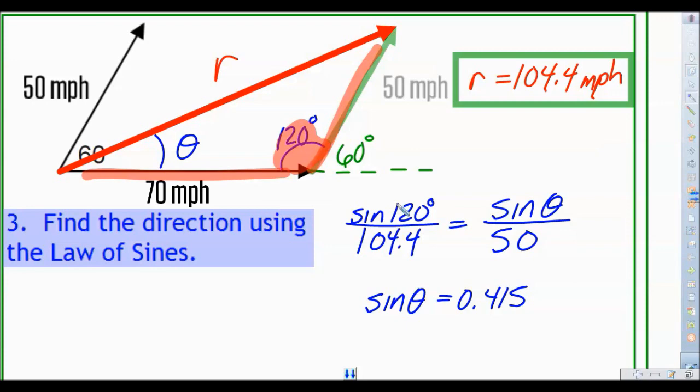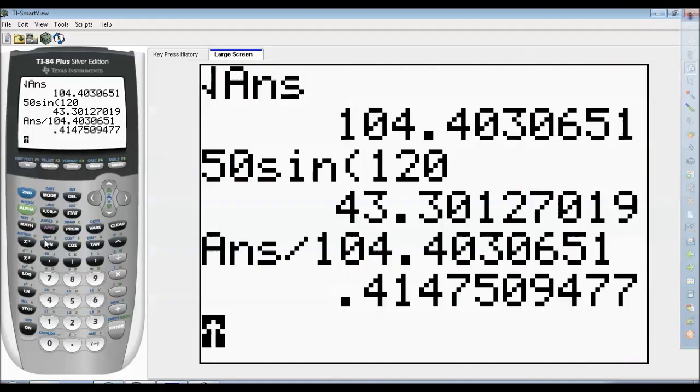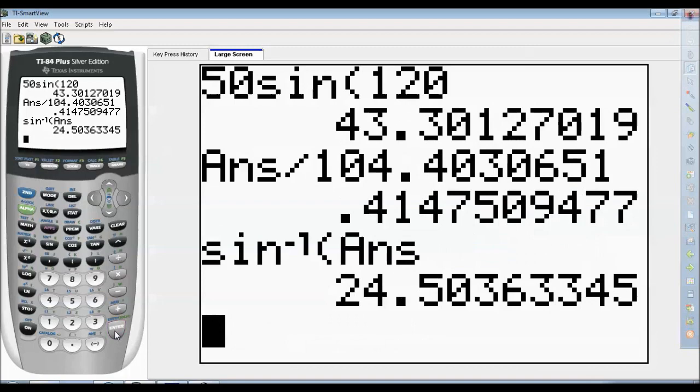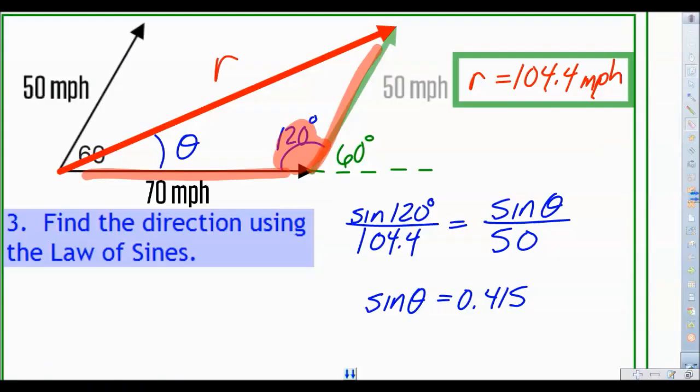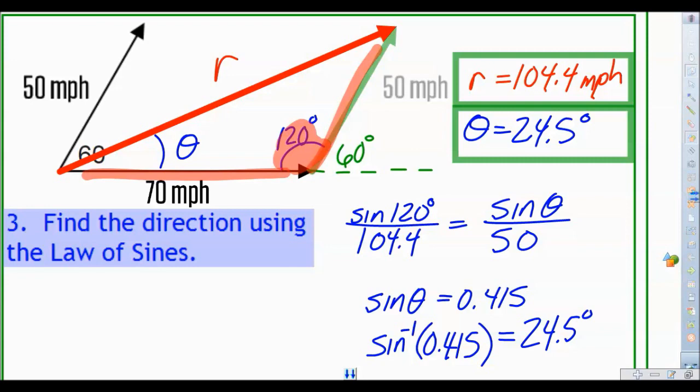Alright, now that we have the sine of theta being equal to 0.415, we're almost there. All we have to do is calculate theta by not using sine, but actually using inverse sine. So now inverse sine gives us an angle of 24.5 degrees, and that is actually the angle that we want. So our final answer that we can pair up now with our magnitude is our final direction here of 24.5 degrees.